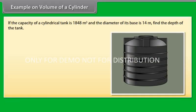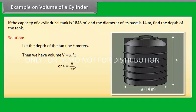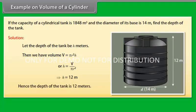If the capacity of a cylindrical tank is 1848 m³ and the diameter of its base is 14 meters, find the depth of the tank. Let the depth of the tank be H meters. Then V = π × r² × H, so H = V ÷ (π × r²), which gives H = 12 meters. Hence the depth of the tank is 12 meters.